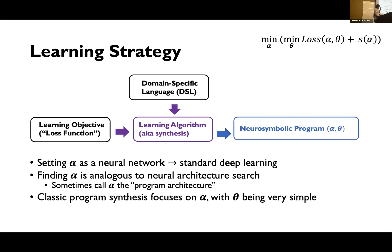What's the learning strategy? You have the DSL specification and the learning objective — the loss function. You feed examples into the learning algorithm and get a neurosymbolic program as output. As mentioned in the last session, if you set this out as a neural network, you get standard deep learning — that's the generalization to new languages.